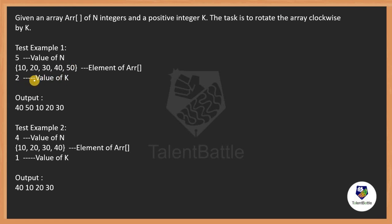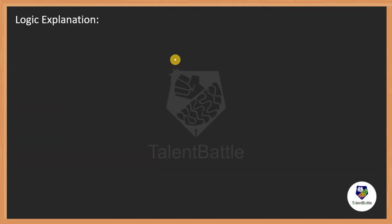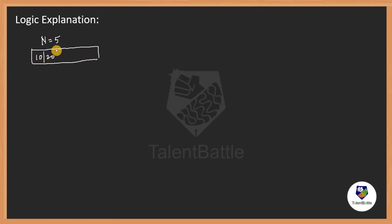Our task is to rotate the array in the clockwise direction using the value of k. In the second sample test case, n is 4 and k is 1. We will first develop the logic for the provided test cases and also discuss the condition where if the value of k is greater than n. As per the first sample test case, n equals 5 and the array elements are 10, 20, 30, 40, and 50, with k equals 2, and we want the rotation.